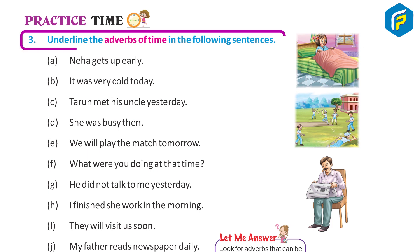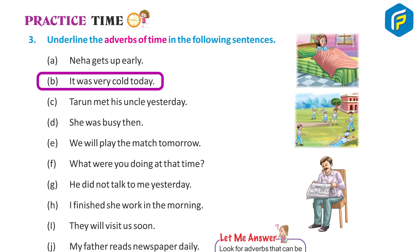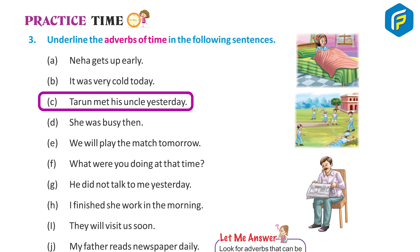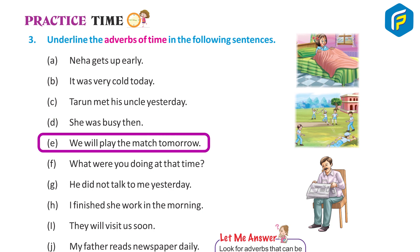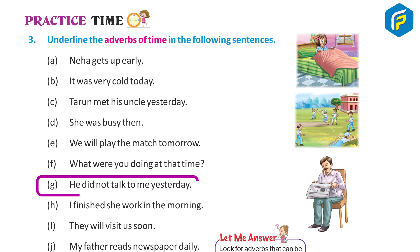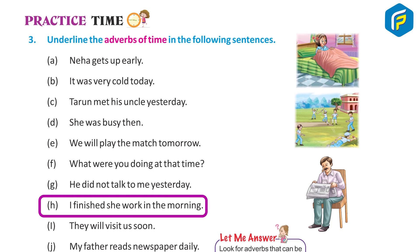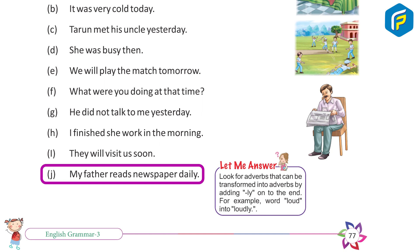Practice Time 3. Underline the adverbs of time in the following sentences. A. Neha gets up early — underline early. B. It was very cold today — underline today. C. Tarun met his uncle yesterday — underline yesterday. D. She was busy then — underline then. E. We will play the match tomorrow — underline tomorrow. F. What were you doing at that time? — underline 'that time'. G. He did not talk to me yesterday — underline yesterday. H. I finished the work in the morning — underline morning. I. They will visit us soon — underline soon. J. My father reads newspaper daily — underline daily.